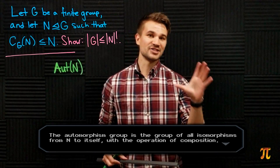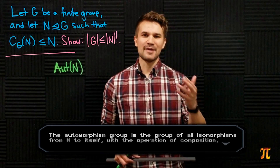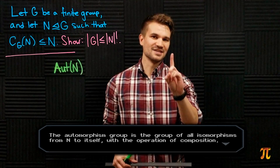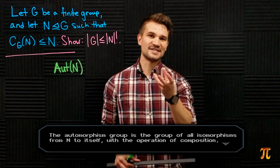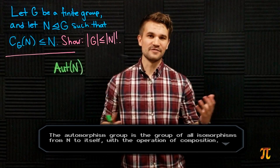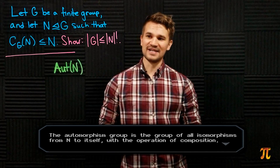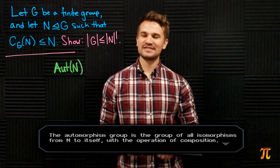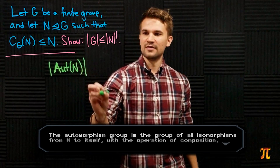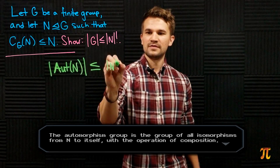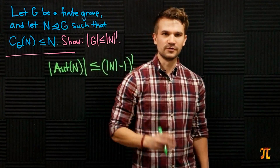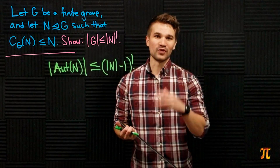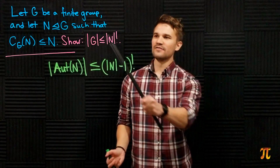The automorphisms on N are always bijections on the set N that fix the identity. A bijection on a set is a rearrangement of its elements, so we're rearranging the elements of N while leaving the identity alone. We can rearrange the remaining elements in (|N| - 1)! different ways, so the order of the automorphism group of N is less than or equal to (|N| - 1)!. It's less than or equal because not every identity-preserving bijection is an automorphism — it must also preserve the group operation.